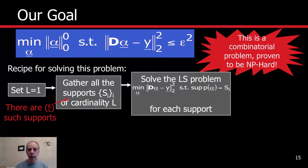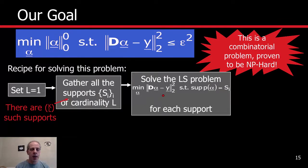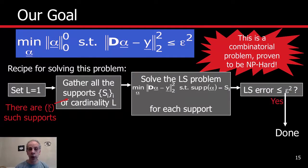For each possible support, we solve the fitting problem. We ask: what happens if I only use the first atom? All that's left is to pick the scale — how much of that atom to use. This is a least-squares problem, a simple quadratic problem. The basic idea is to project the signal onto the atom we've selected and compute the error. If the error is less than our threshold, we're done and we pick the alpha that produced that small error.